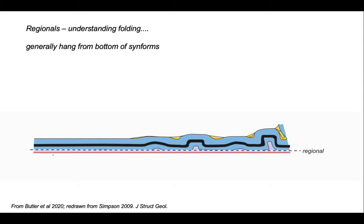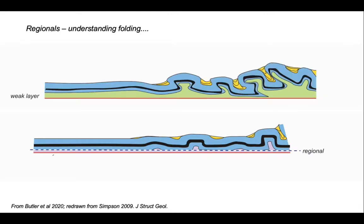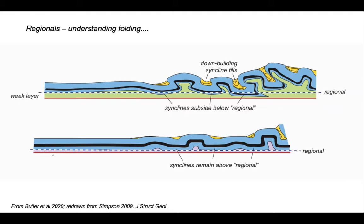But there are exceptions to this. So let's look at the results of another analogue experiment. But in this case, the model was built on a thick, very weak layer that was able to flow. So as the contraction was imposed upon the model, the synforms were evacuated and material flowed into the cores of the antiforms. So if we construct the regional for that, we can see that the synforms have subsided below their regional.